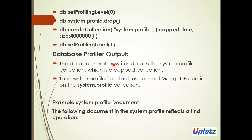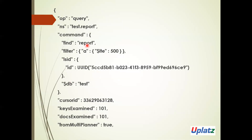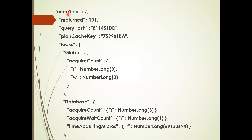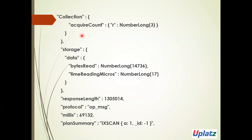Next is database profiler output. The system.profile is basically a capped collection. To view the profiler's output, we need to use normal MongoDB queries on system.profile. For example, a query on my database has 101 keys examined — I have 101 returned. The cursor has been used, return is 101, and the type and my database collection has been reading. My collection has storage, bytes read, and my response length.